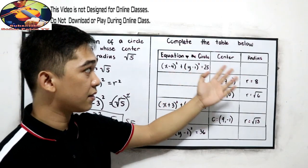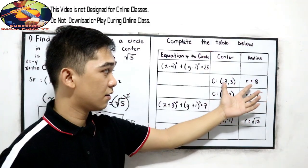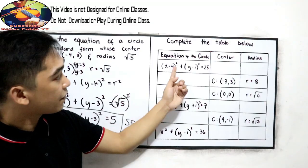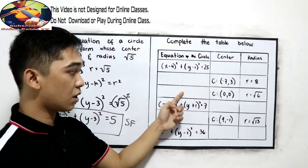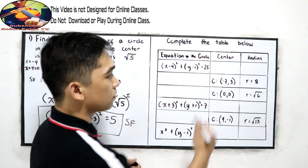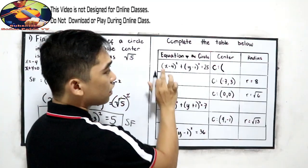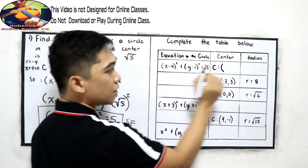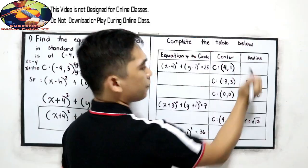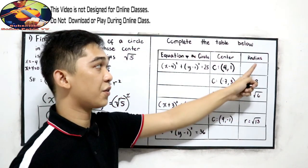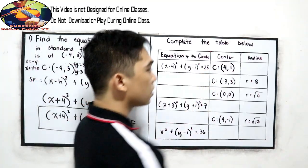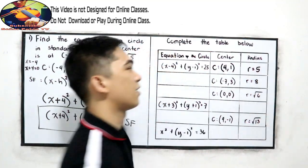We're going to find the center and the radius, and the equation of the circle. I will answer items 1 and 2, then you answer 3, 4, 5, and 6. For item 1, the center: x equals positive 4, y equals positive 1 — just change the sign. The radius is the square root of 25, which equals 5.